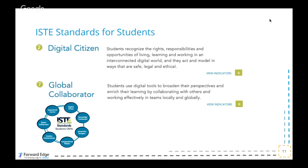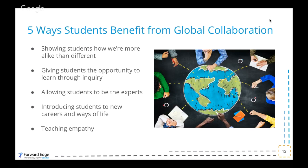ISTE has also listed five ways students benefit from global collaboration. Number one: showing students how we're more alike than different. As they begin to collaborate and connect with classrooms outside of their school building, they develop relationships with students and realize they have a lot of similarities — similar talents, similar fears, similar feelings, similar goals and aspirations. That really helps them appreciate that no matter where you come from, we're all alike and can connect in meaningful ways.